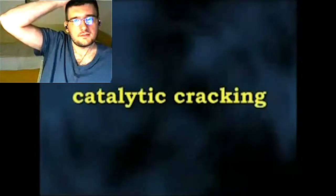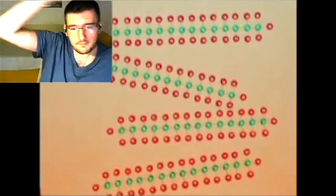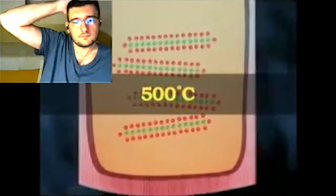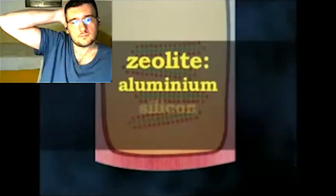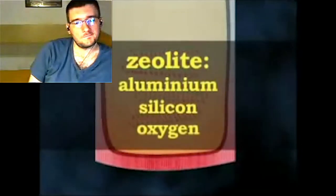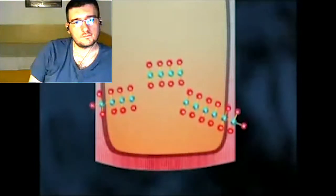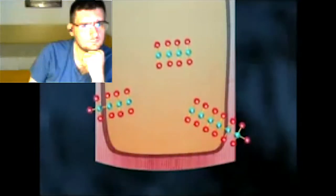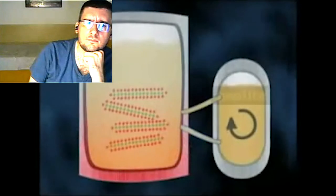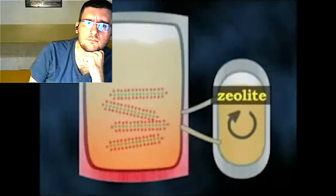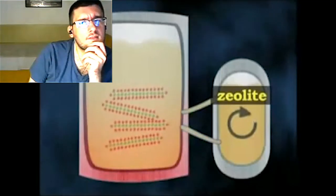The most effective process in creating lighter alkanes is called catalytic cracking. The long carbon bonds are broken by being heated to around 500 degrees Celsius in an oxygen-free environment in the presence of zeolite. This crystalline substance, made of aluminium, silicon and oxygen, acts as a catalyst. A catalyst is a substance that speeds up a reaction or allows it to proceed at a lower temperature than would normally be required. During the process, the catalyst, usually in the form of a powder, is treated and reused over and over again.